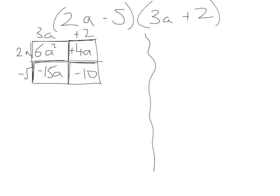I'm going to write out my answer now. So it's going to give me 6a squared plus 4a minus 15a minus 10. Collecting up the like terms, we have 6a squared plus 4a minus 15a. So that's minus 15 plus 4. That's going to give me minus 11a minus 10.